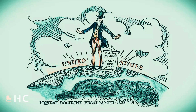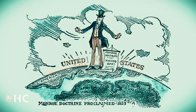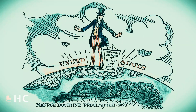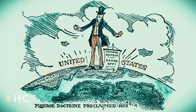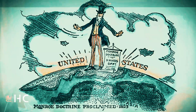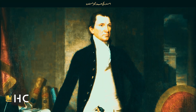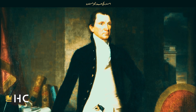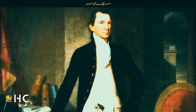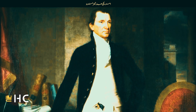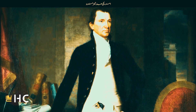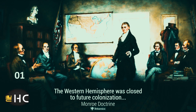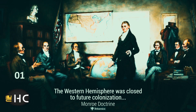The US decided that it would protect these countries and counter any future European aggression in the region. The US government announced this policy as the Monroe Doctrine in 1823. The Monroe Doctrine was issued two years after the independence of Mexico. President James Monroe issued a foreign policy statement to the US Congress on December 2, 1823. This statement was called the Monroe Doctrine.